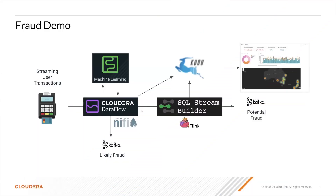Today we're going to look at how we can use Cloud Dataflow to detect fraudulent transactions in real time within a stream of user transactions. Within Cloud Dataflow we're going to use NiFi to collect and receive those messages in real time over the network. NiFi will make calls to a machine learning model to get a scoring that tells us the likelihood that each transaction is fraudulent.